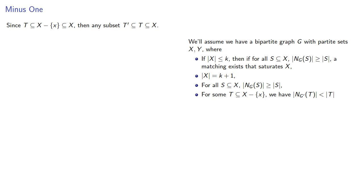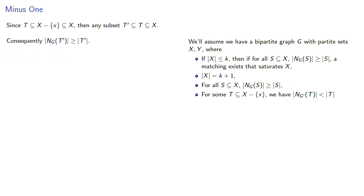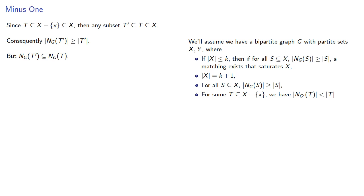Since t itself is a subset of x, any subset t prime of t is also a subset of x. So the neighborhood of t prime has to be larger than t prime itself, and the neighborhood of t prime has to be a subset of the neighborhood of t. This means t and its neighborhood meet the requirements of our induction hypothesis — there are fewer than k vertices in t, and every subset of t has a neighborhood that is at least as big. So by our induction assumption, there is a matching from t to the neighborhood of t.